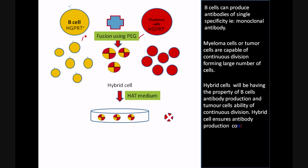At the same time it will have the capability of continuous proliferation that is inherited from the tumor cells. Unfused B cells undergo normal cell death in HAT medium.